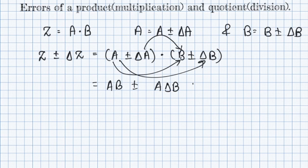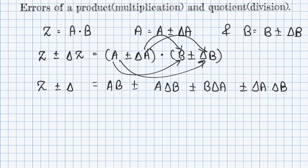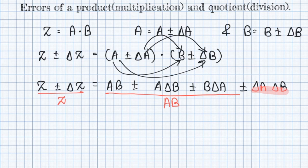Opening the brackets, we get ab ± a·Δb ± b·Δa ± Δa·Δb, and on the left-hand side we have Z ± ΔZ. Now dividing LHS by Z and dividing RHS by ab.